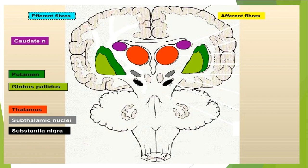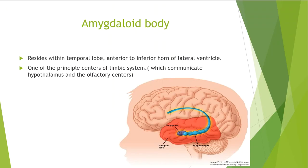In section the lentiform nucleus appears as a triangular area with the base directed to the insula and the apex directed to the thalamus. It comprises two parts: the putamen, which is the larger, darker, outermost portion, and the globus pallidus, the inner lighter pale segment. The amygdaloid body resides within the temporal lobe, anterior to the inferior horn of the lateral ventricle. It is one of the principal centers of the limbic system, which communicates with the hypothalamus and olfactory centers.